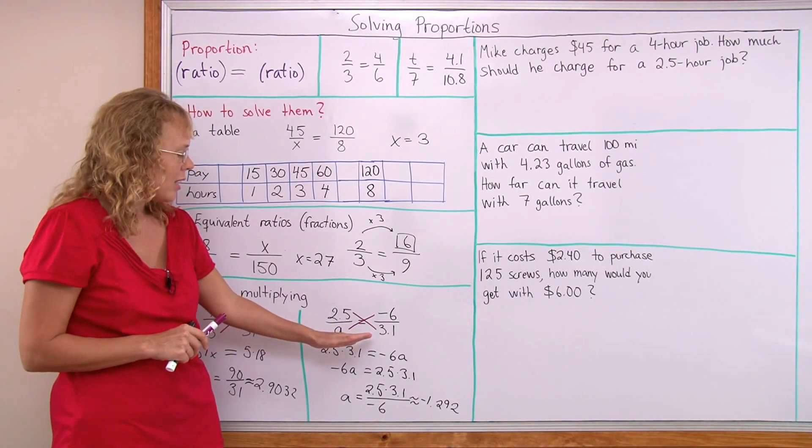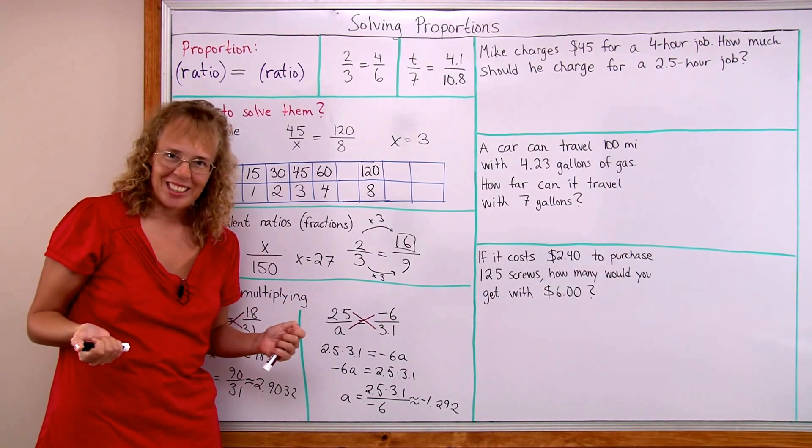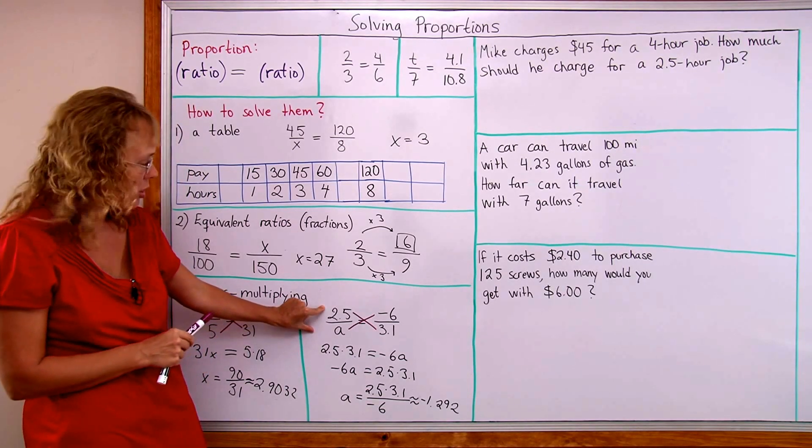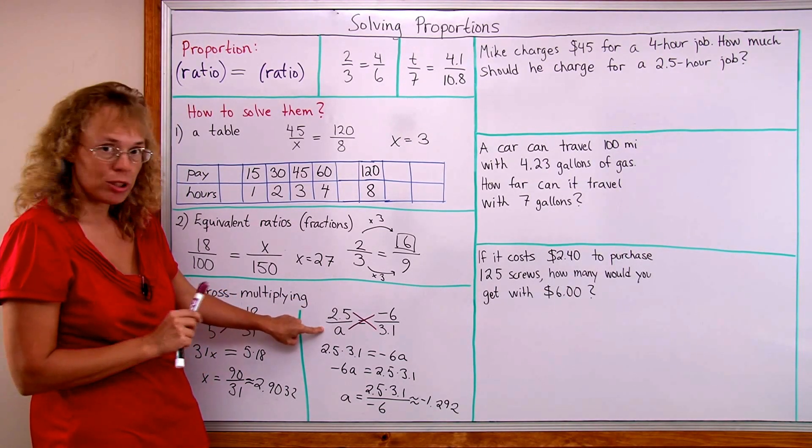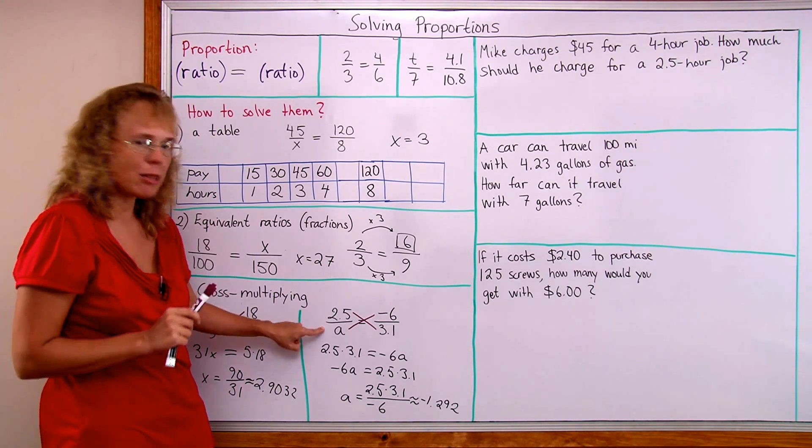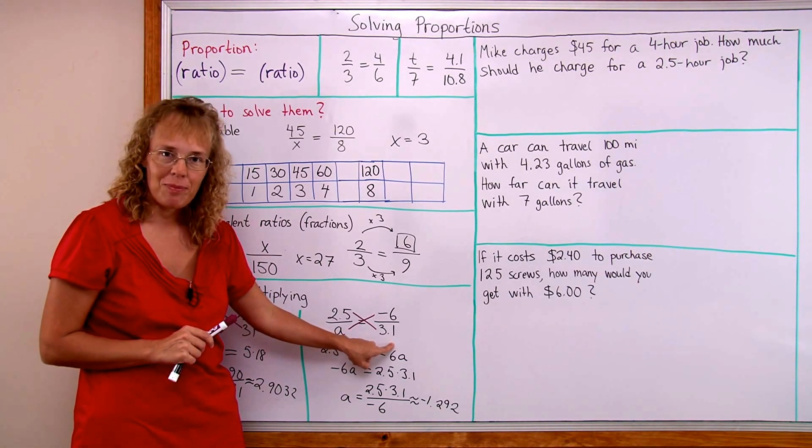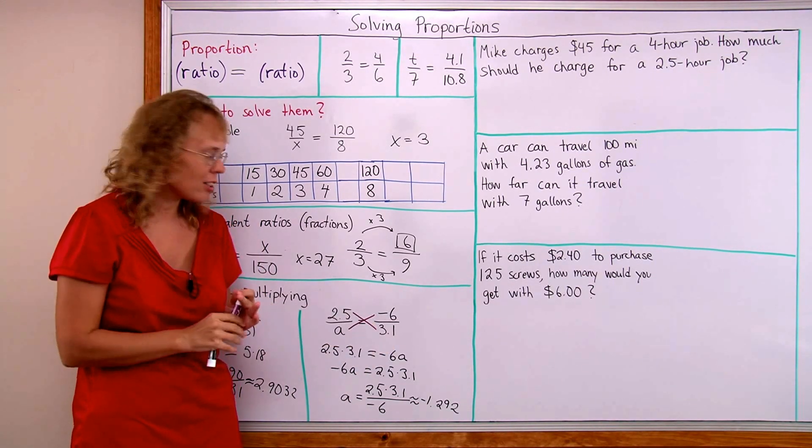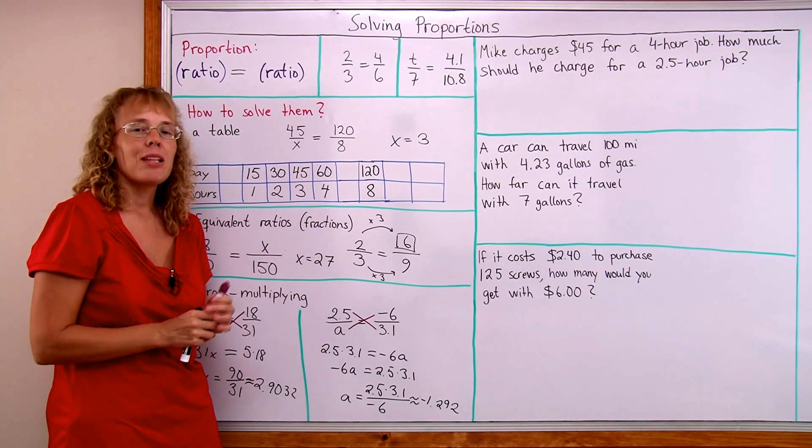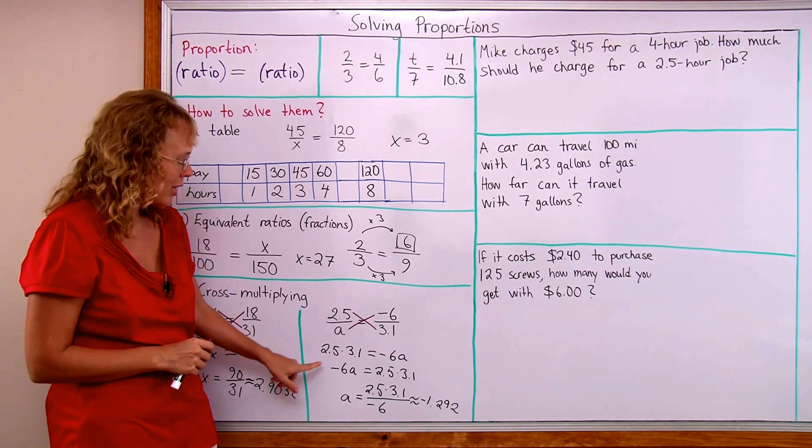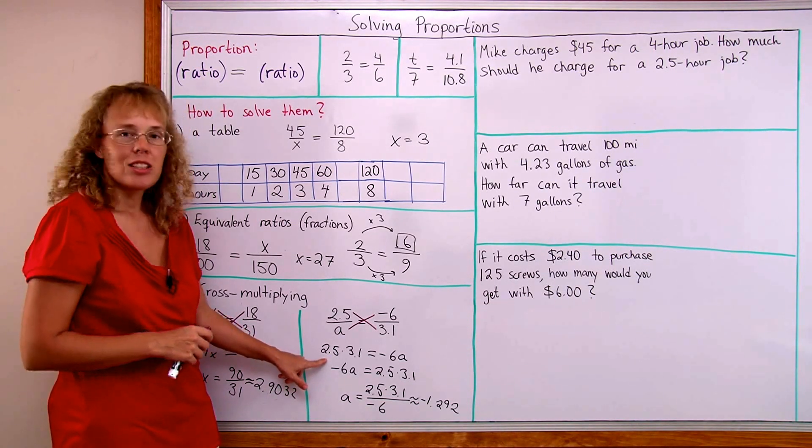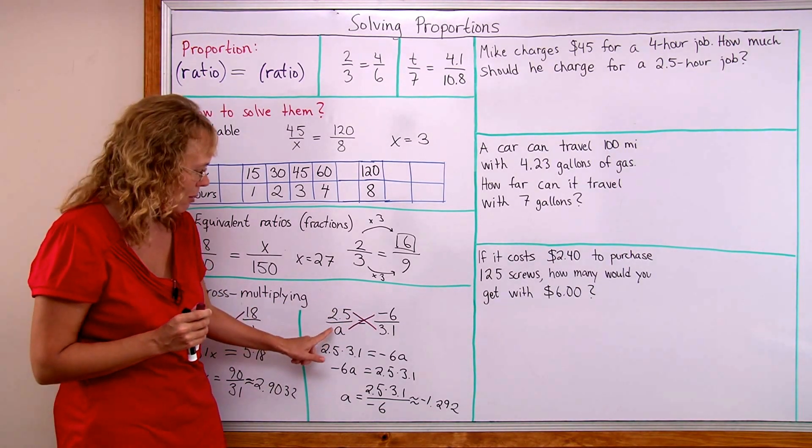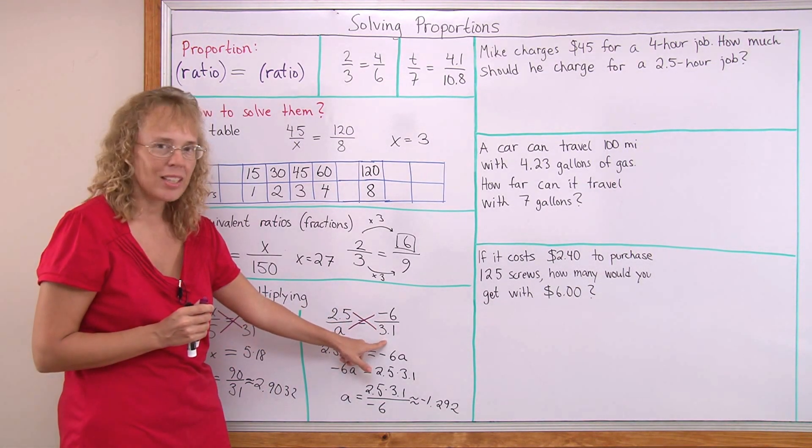Cross-multiplying might look like a magic trick, but it's not really. It's a shortcut for multiplying this original equation by A, both sides by A. And then also multiplying both sides by 3.1. So it is using the basic principle of multiplying both sides of the equation by the same number. But that is done twice. And then we eventually come to this. So it is a shortcut for multiplying both sides of the equation by this and by that, okay? It's not a magic trick.